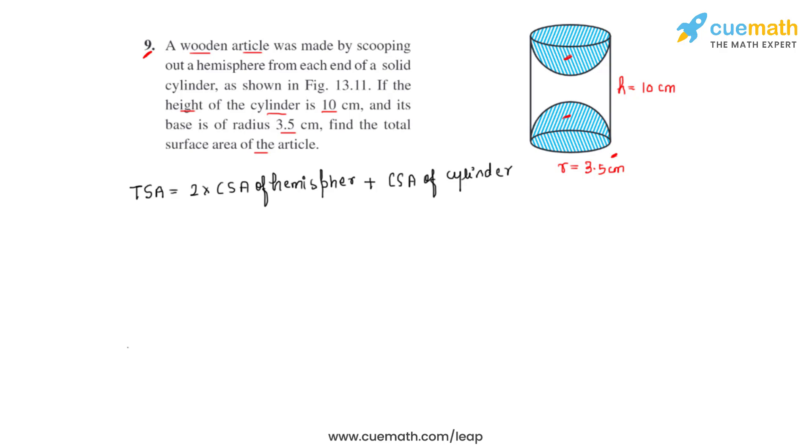Now we will be writing the formulas for each of these. We know that the curved surface area of a hemisphere is found by making use of the formula 2πr², and the curved surface area of a cylinder is 2πrh. We can take 2πr common, so we will be left with 2r plus h inside the brackets.